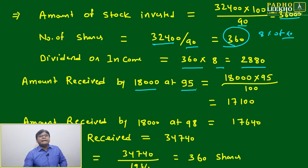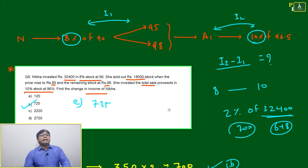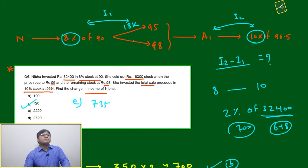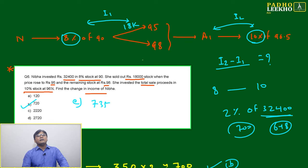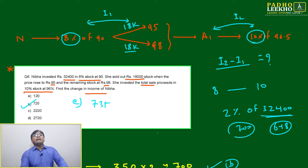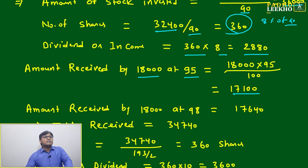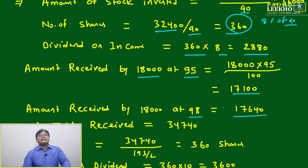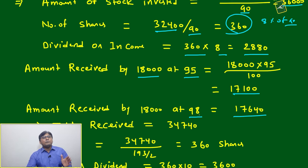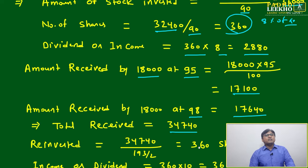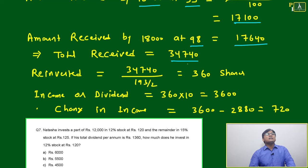In the second step, she sells. The total stock value is 36,000, so half is 18,000 each side. She sells 18,000 at 95: amount received = 18,000 × 95 / 100 = 17,100. She sells the remaining 18,000 at 98: amount received = 18,000 × 98 / 100 = 17,640. Total amount received = 34,740.